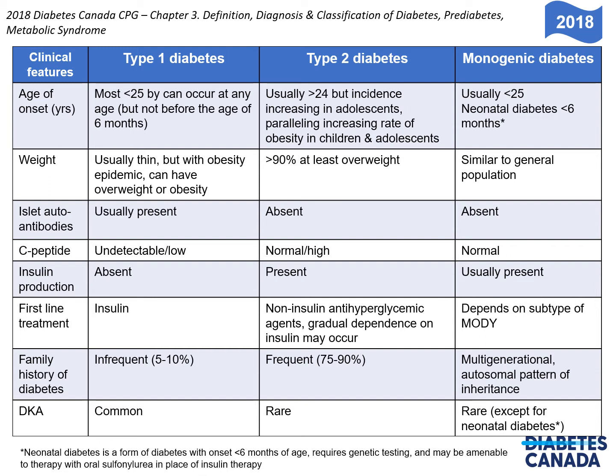First-line treatment for type 1 diabetes is insulin. For type 2 diabetes, initially, unless there is metabolic decompensation, non-insulin anti-hyperglycemic agents often will be adequate, but with time, most people with type 2 diabetes may also need insulin. Monogenic diabetes can be quite varied, and some people respond to sulfonylureas, others to insulin, others to diet.